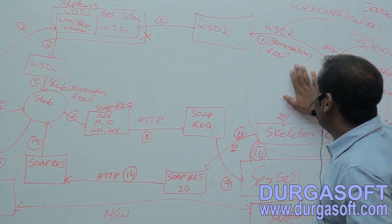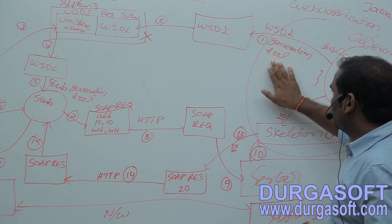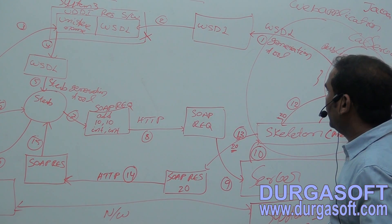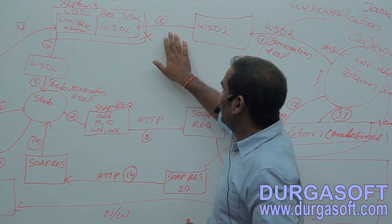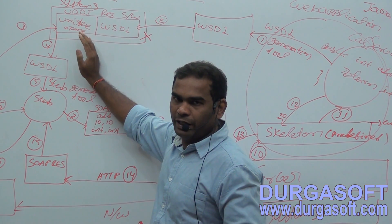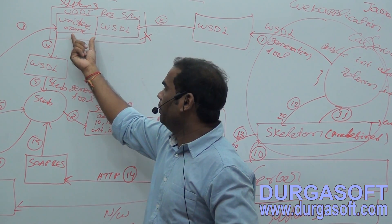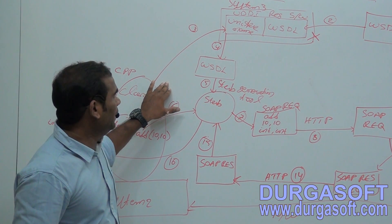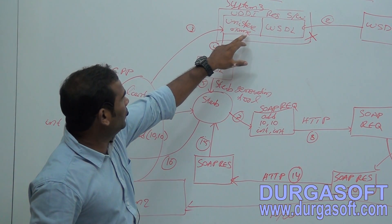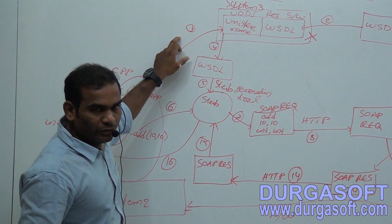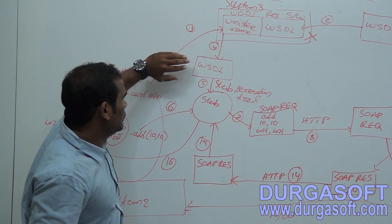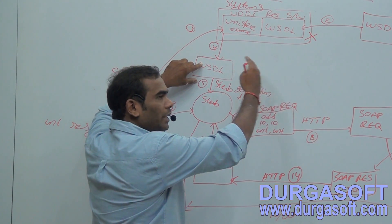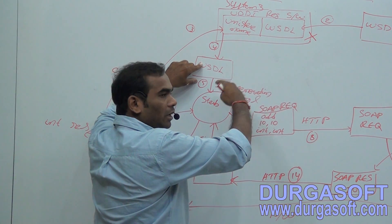In the first step, the service provider generates the WSDL file using the WSDL generation tool. The input for the WSDL generation tool is the service class. In the second step, we store this WSDL file into the UDDI registry with a unique name. The service provider then shares this unique name with the client. The client uses that unique name to interact with the UDDI registry and, in the fourth step, retrieves or downloads the WSDL file — either from the UDDI registry or directly from an email attachment.